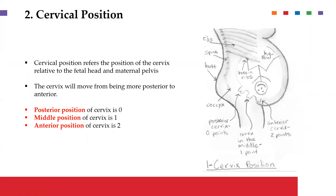Cervical position is basically the position of the cervix relative to the fetal head and the maternal pelvis. Originally, the position of the cervix is normally posterior. As one nears spontaneous labor, it normally moves towards the anterior. Therefore, the anterior position would give a higher score compared to when it is still posterior.